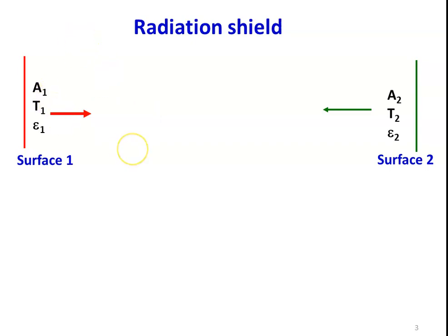There are two surfaces, surface 1 and surface 2. Surface 1 is at temperature T1, area A1, with emissivity epsilon 1, and surface 2 is at area A2 with temperature T2 and emissivity epsilon 2. They exchange heat by radiation. From the previous lectures, we can calculate the heat transfer without the radiation shield. Now we introduce a third surface called the radiation shield, which has lower emissivity and higher reflectivity. The radiation shield is inserted between the two surfaces to minimize the radiation heat transfer between surface 1 and surface 2.